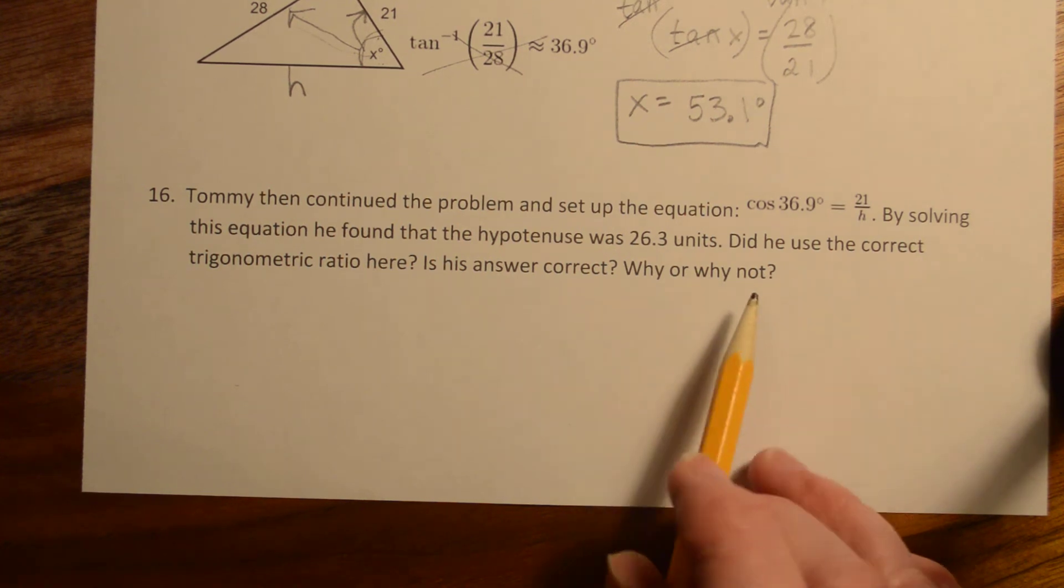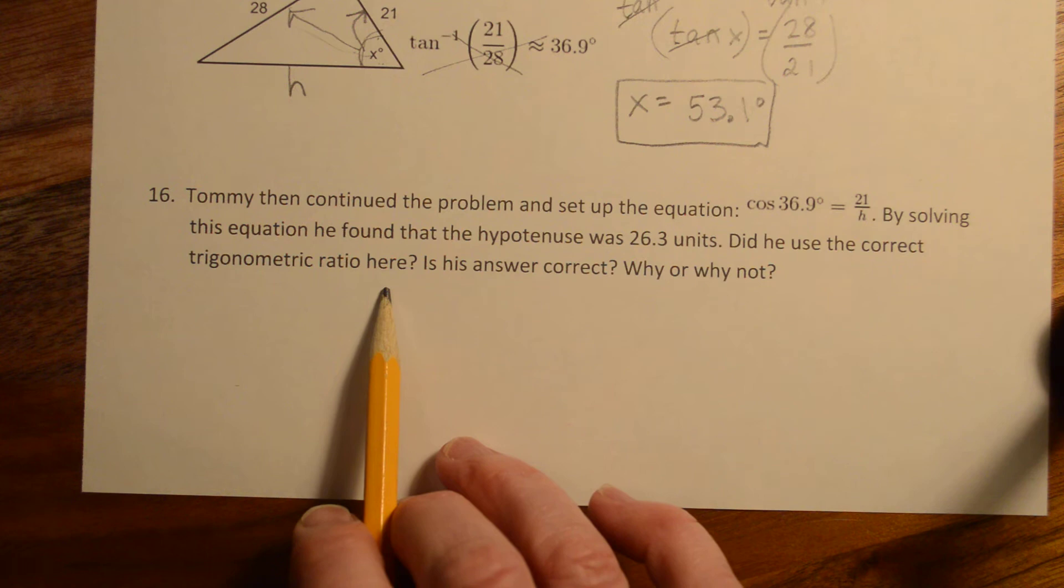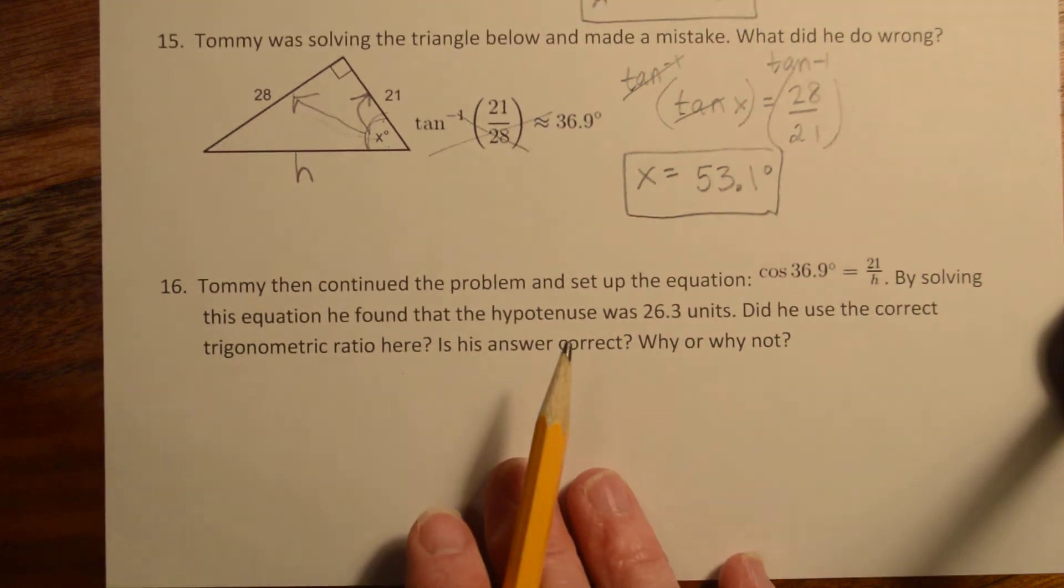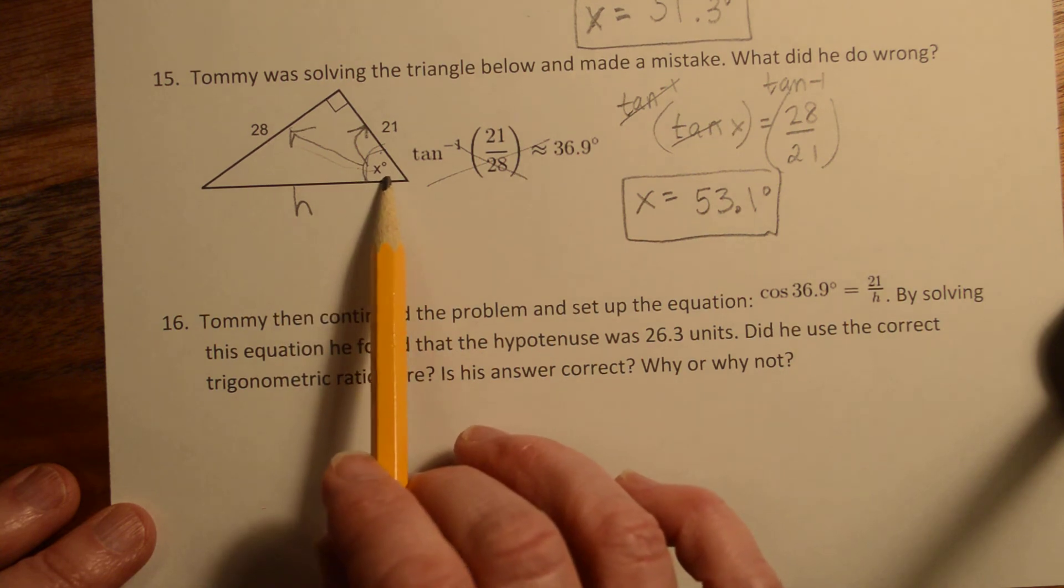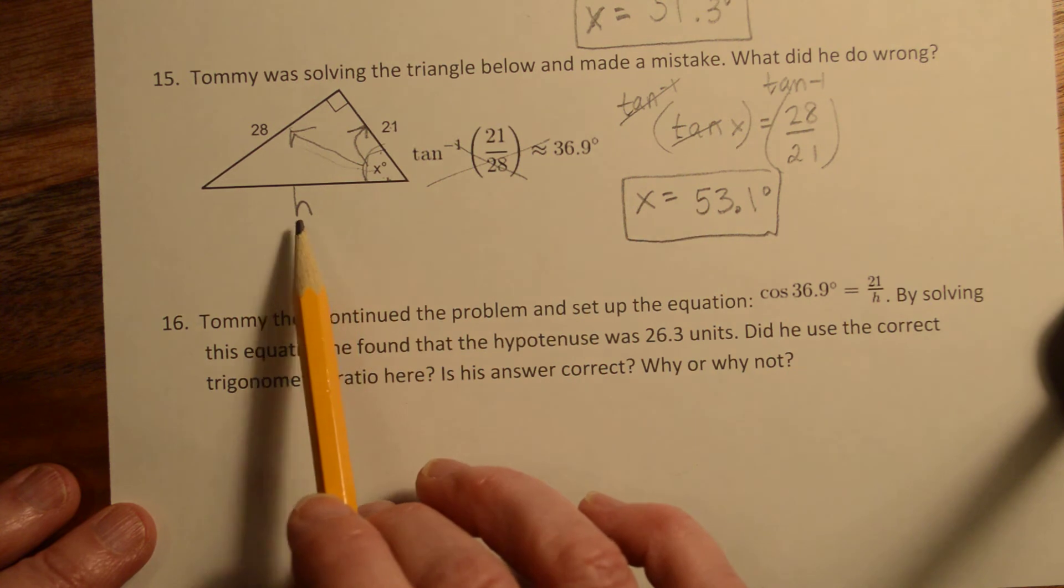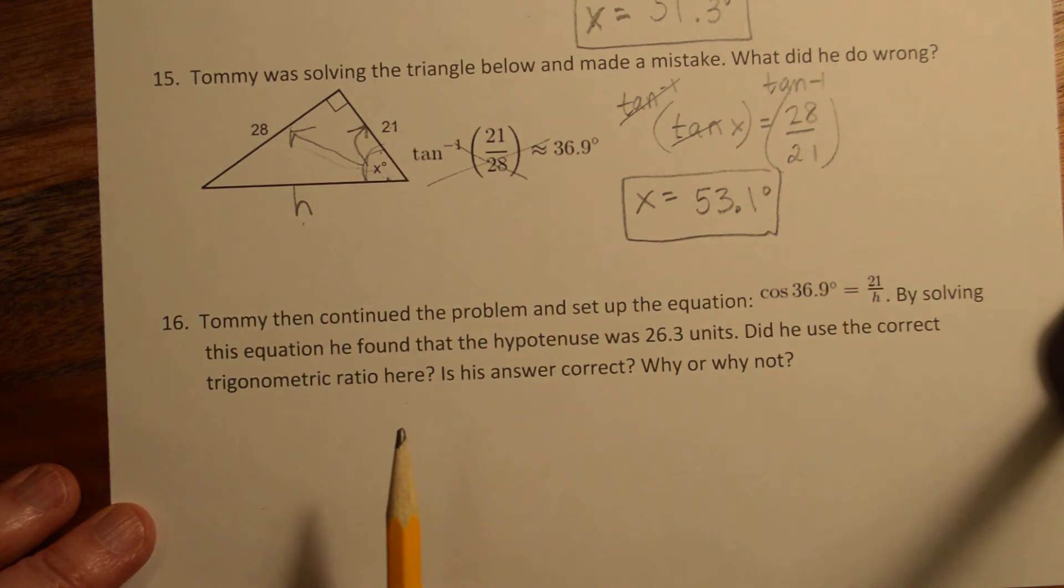All right, so let's take a look at it. Did he use the correct trig ratio here? So again, we're going to go back and look at this. So he's using, for the reference angle that's given, he's using adjacent over hypotenuse, which is cosine.